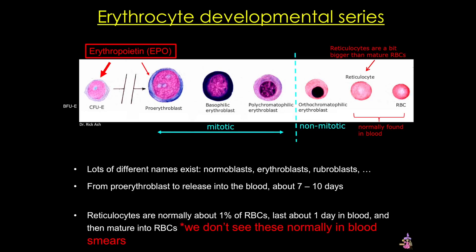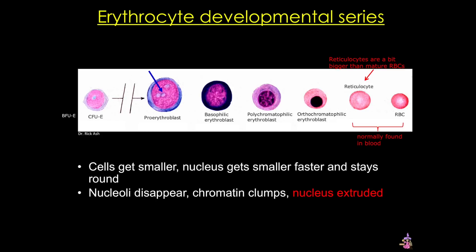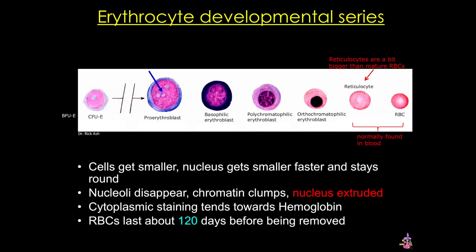So how do we tell the cells apart? What are some of the changes that we can see as red blood cells mature? From left to right the cells get smaller, but you can see that the nucleus gets smaller faster and it stays round — this is in contrast to the granulocytes we'll see soon. The nucleoli disappear, the chromatin gets clumpy, and the red blood cell nucleus is extruded before the reticulocyte stage. As their name implies, the cytoplasm becomes more and more eosinophilic due to hemoglobin accumulation. These cells will circulate for about 120 days, and practically speaking this means that treatments to restore red blood cells can take up to three months to be fully effective.